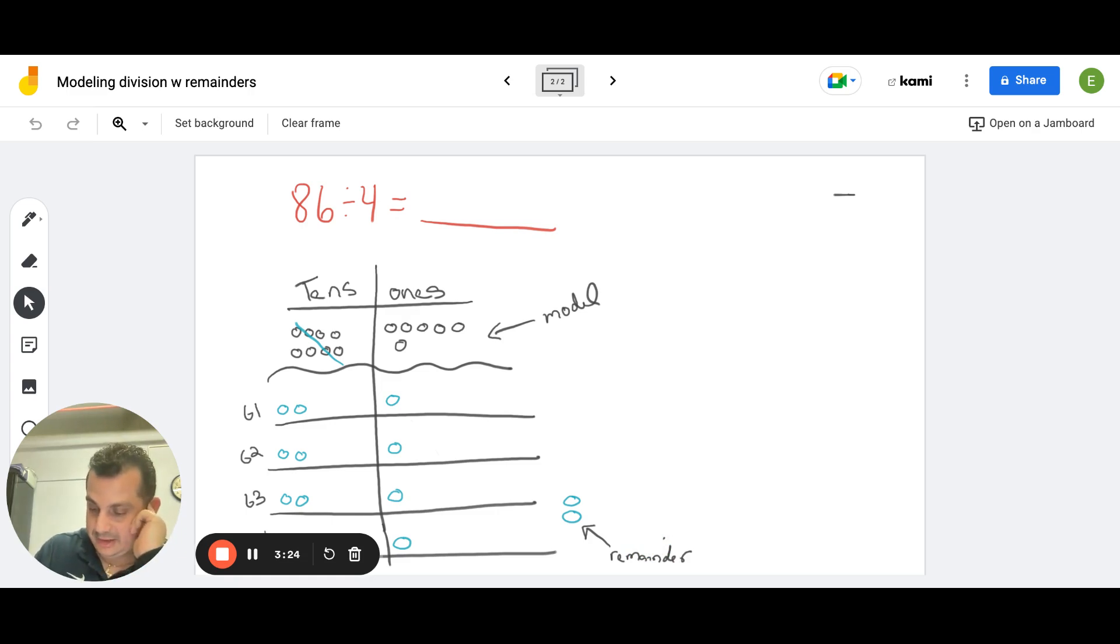So you're looking inside each group I have 10, 20, and a 1. So I have 21 in each of my 4 groups. I have 21. And there's a remainder here of 2. So 21, remainder 2. So the quotient is going to be 21. And the remainder will be 2.